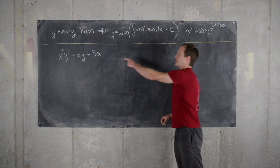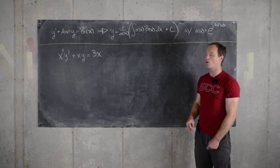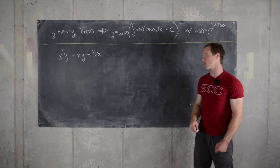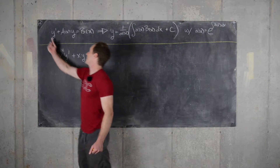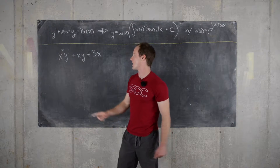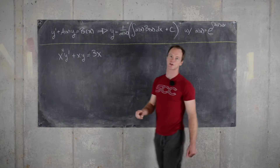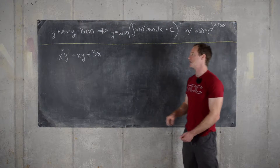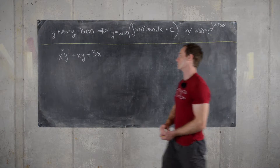Notice that this differential equation that's given is not quite in this form, because we really need a coefficient of 1 in front of y prime, but instead we have a coefficient of x squared. So let's see what we can do to get it in that form.